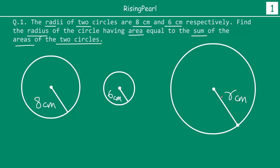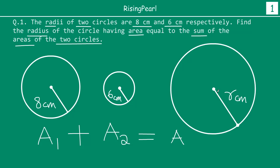So let's say this is the bigger circle whose radius is 8 cm, and this is the smaller circle whose radius is 6 cm. Now we are talking about a third circle. Let's say this radius is r cm. Clearly this circle is bigger, because what is given is that the area of this circle — let's say area A — is equal to the sum of the areas of the first two circles, a1 plus a2. That is the radius we have to find out.